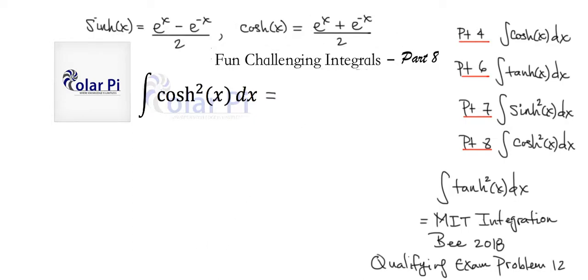We've defined cosh here, so we can rewrite the given integral as follows, which is e to the x plus e to the negative x, divided by 2, and then squared dx, right?